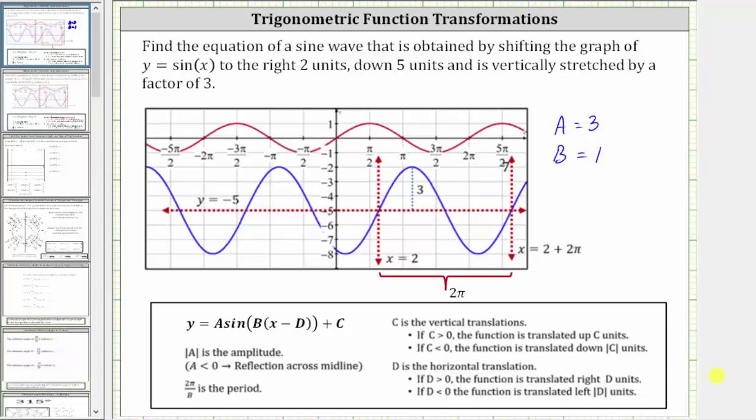Because the graph is shifted right two units, d is positive two, which means we'll have x minus two here. Because the graph is shifted down five units, c is negative five.